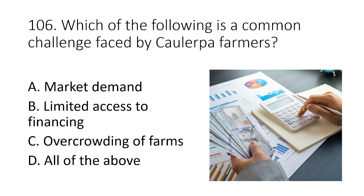Question 106. Which of the following is a common challenge faced by Caulerpa farmers? A. Market demand B. Limited access to financing C. Overcrowding of farms D. All of the above. The answer is B. Limited access to financing.